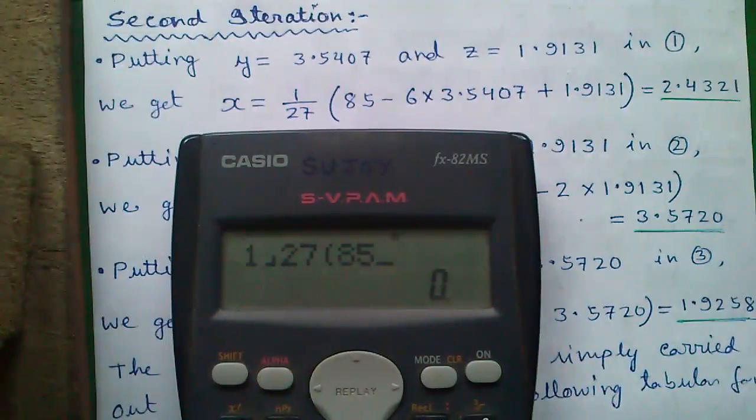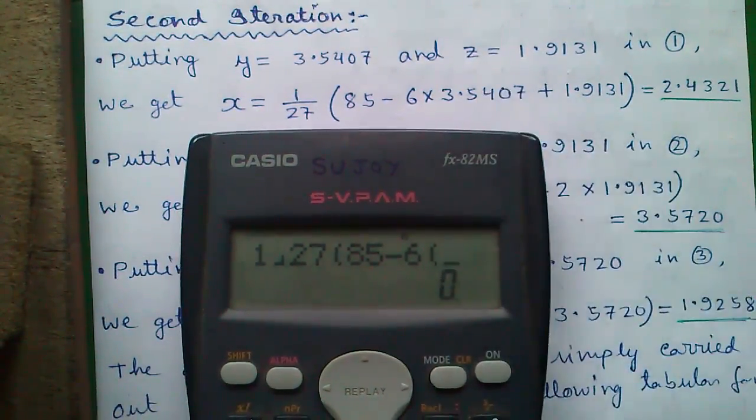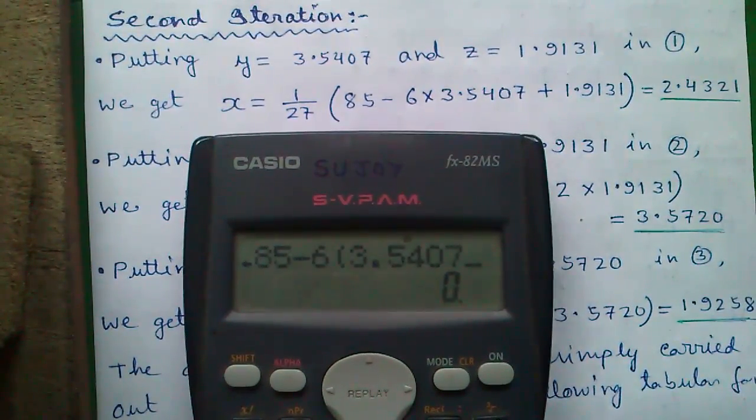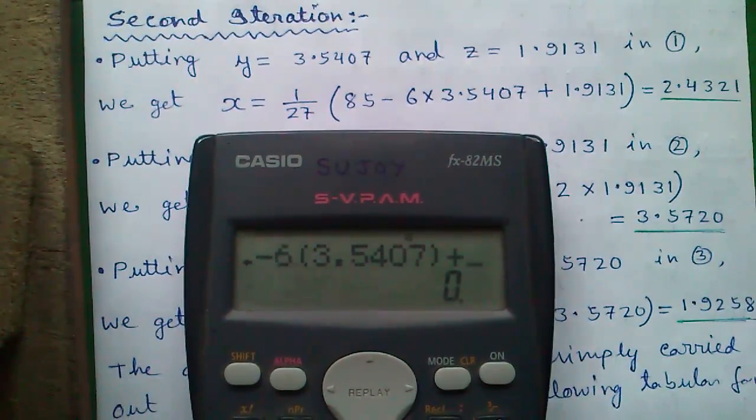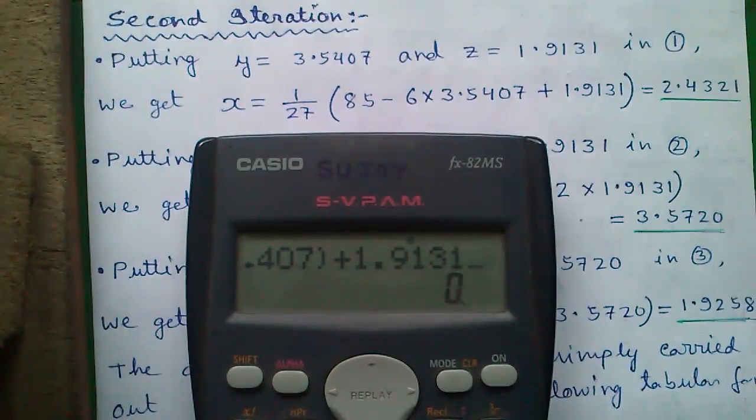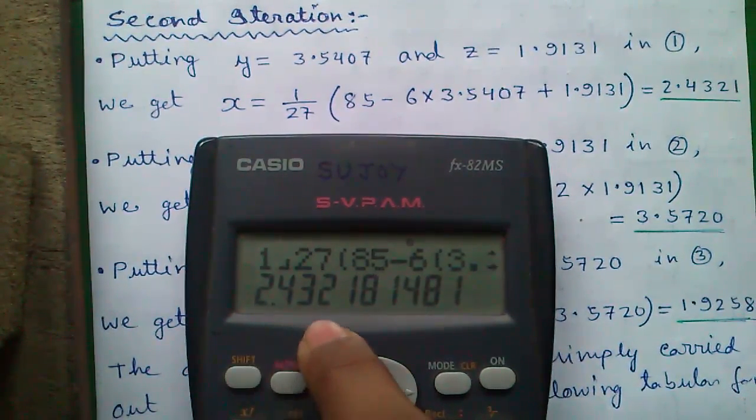Minus 6 into y. Y is 3.5407, plus z, 1.9131. And press equals to. You will get 2.4321.